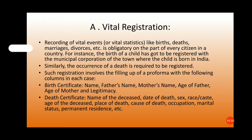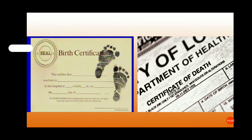The death certificate records the name of the deceased, date of death, sex, race or caste, age of the person, place of death, cause of death, occupation, marital status, and permanent residence, etc. These are the details captured in birth and death certificates.